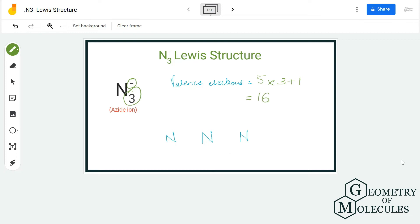Now place all these nitrogen atoms in a linear geometry like this. Now place a pair of electrons between two nitrogen atoms to show a bond. This way we have used up four valence electrons out of 16.